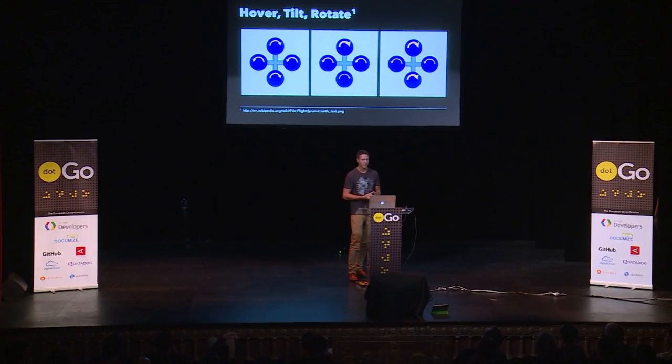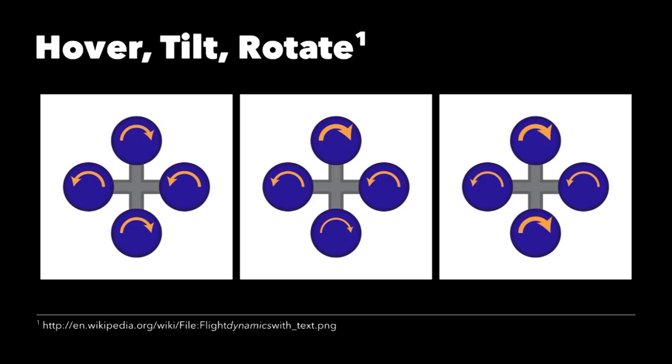The next thing I needed to figure out is the physics of quadcopters, and it's pretty simple. Three things you might want to do initially are hovering, tilting, or rotating. For hovering, you need to spin all the rotors at the same speed, and you need to make sure that adjacent rotors spin in opposing directions. Otherwise the rotational force from the rotors will transfer to the drone itself and it will rotate around its own axis. But luckily the drone is already configured this way by default.